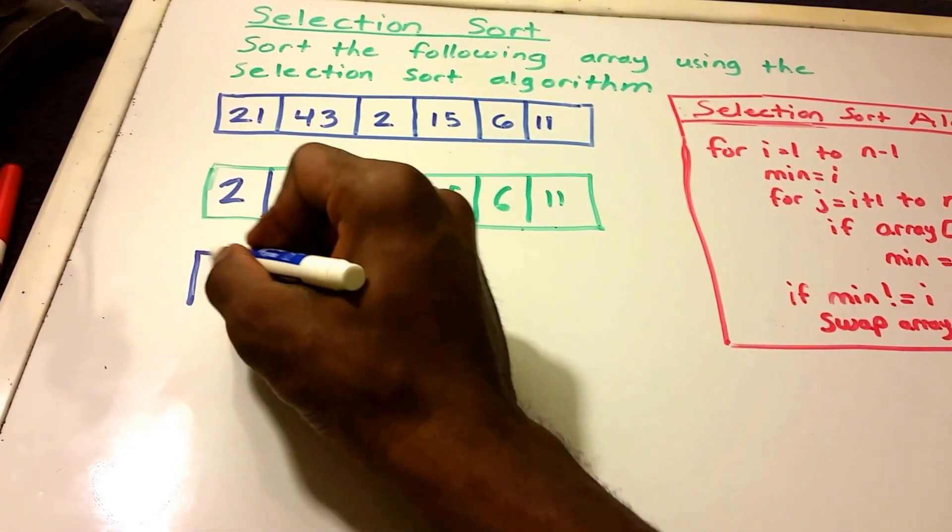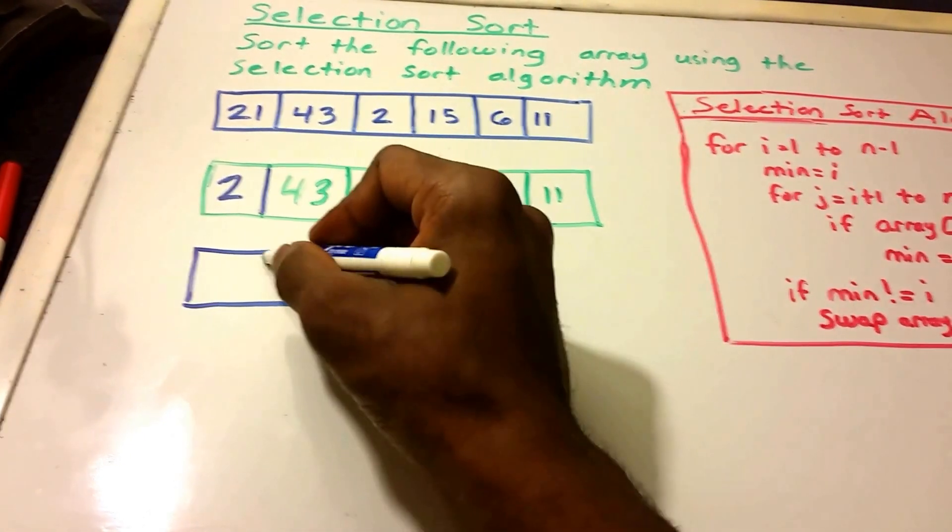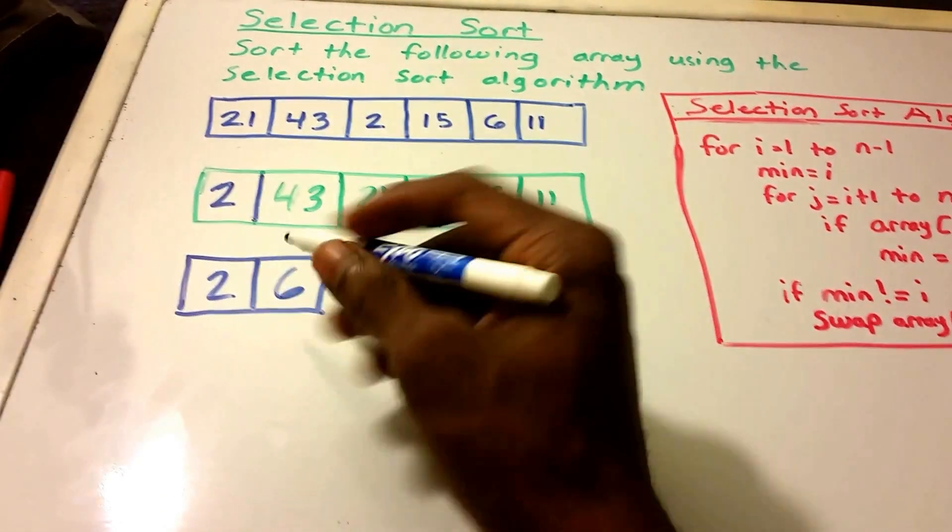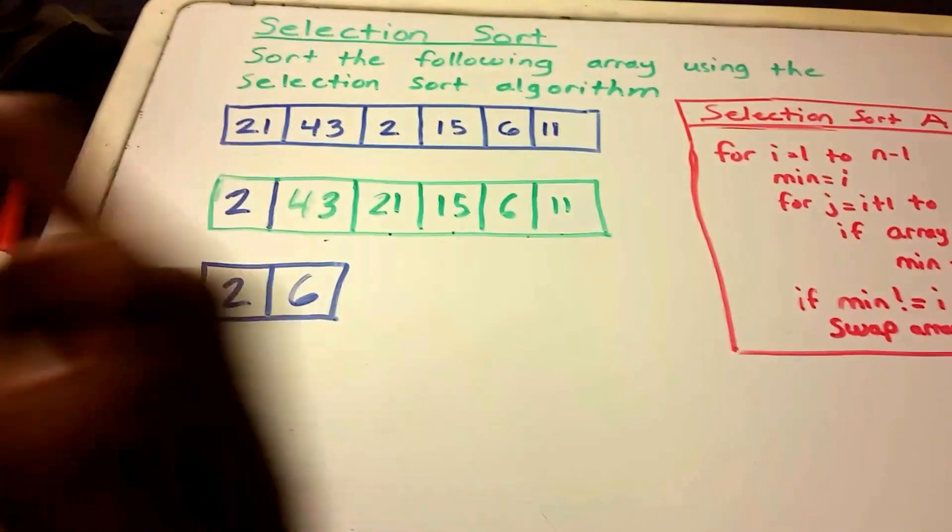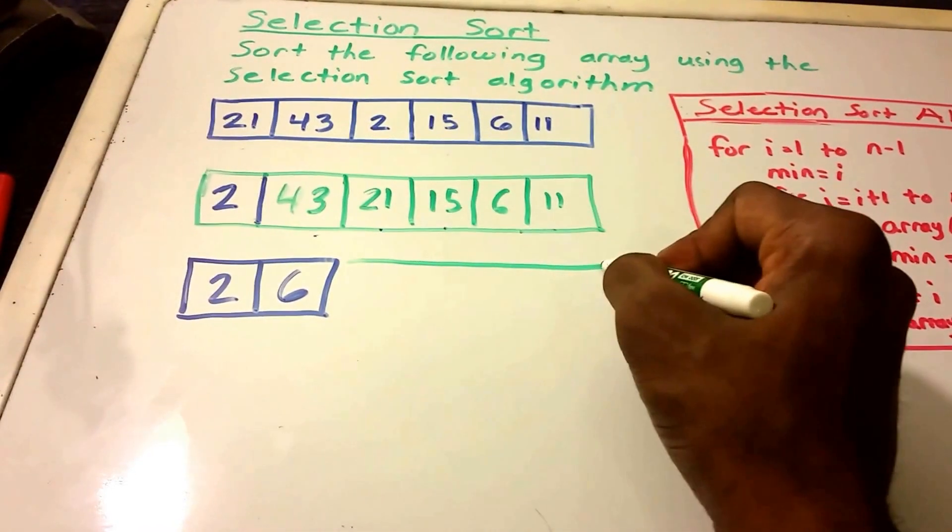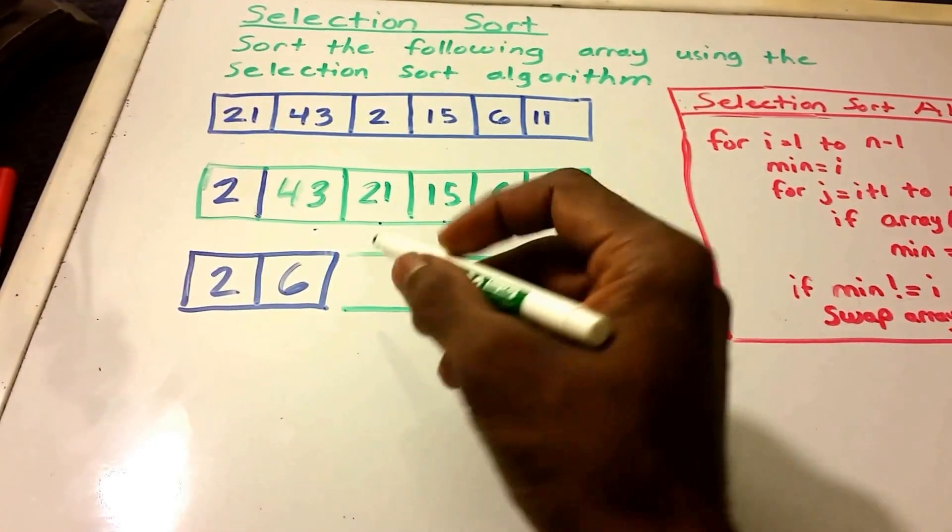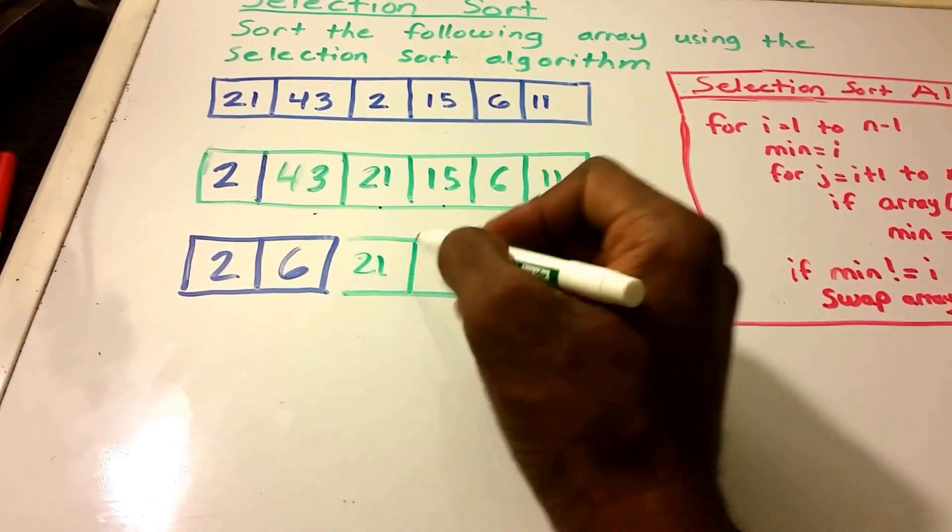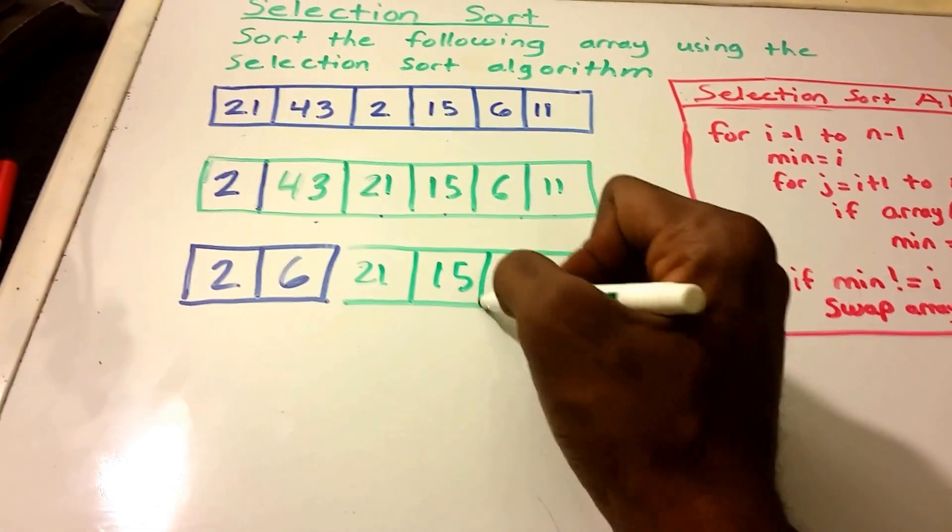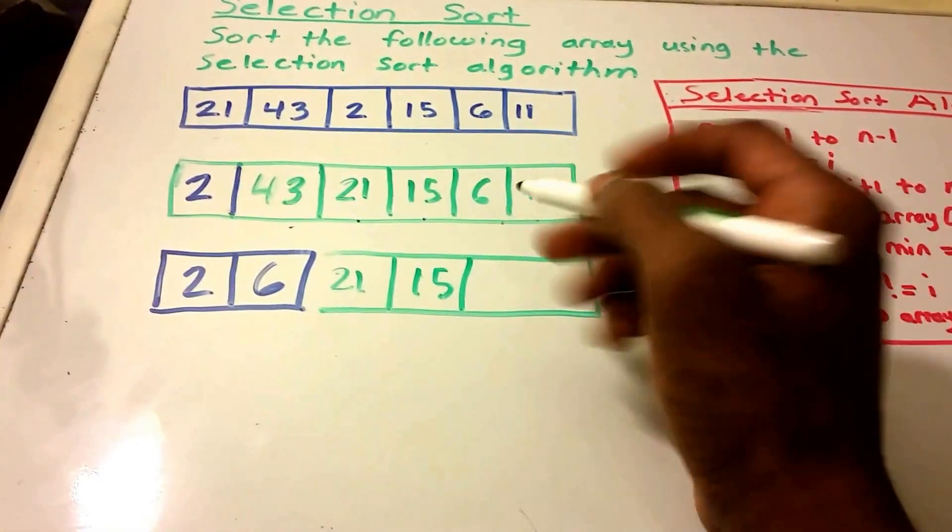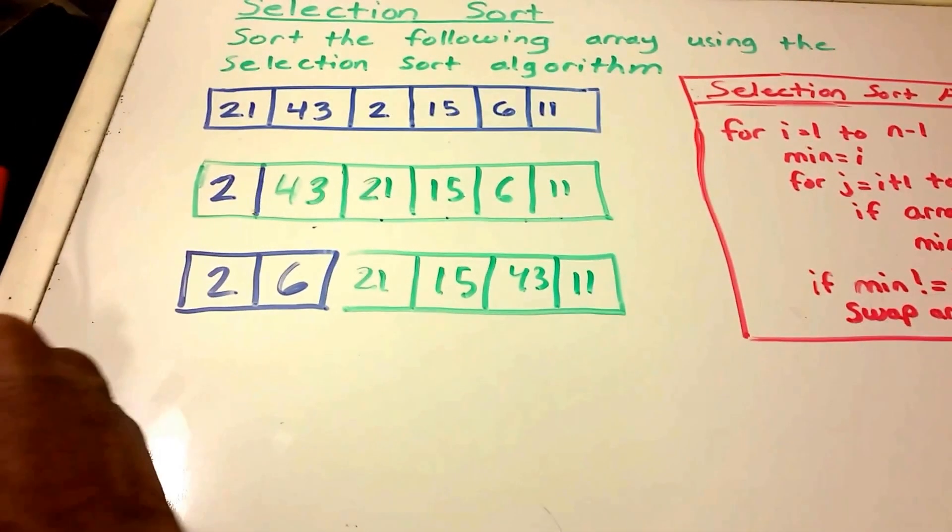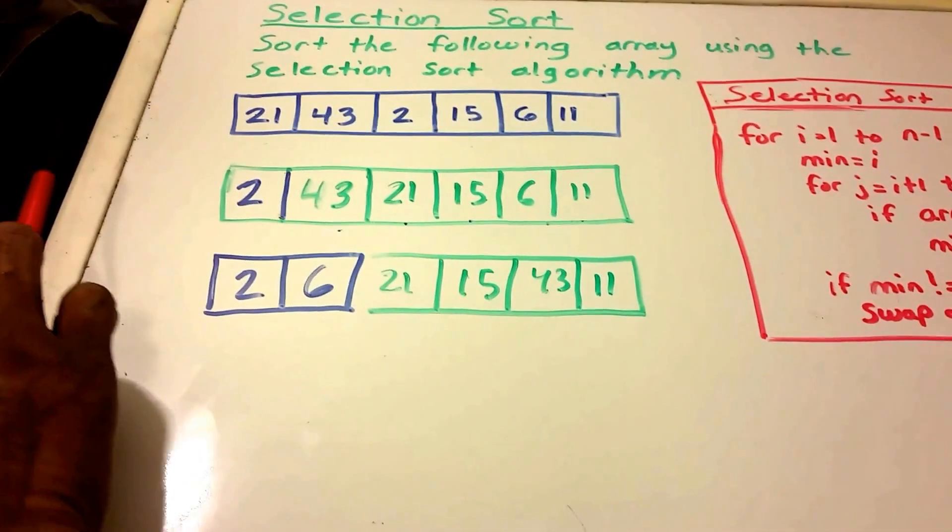So now we get 2, which is already sorted. And then 6. And then we get 21. And remember we swapped the 6 and the 43. So we get 43. And then 11. Okay. And then we're going to continue with this.